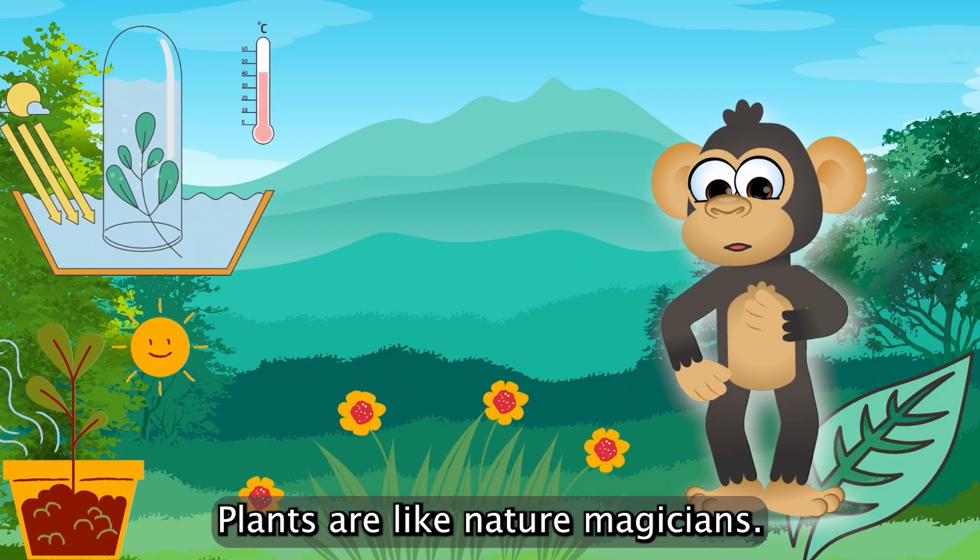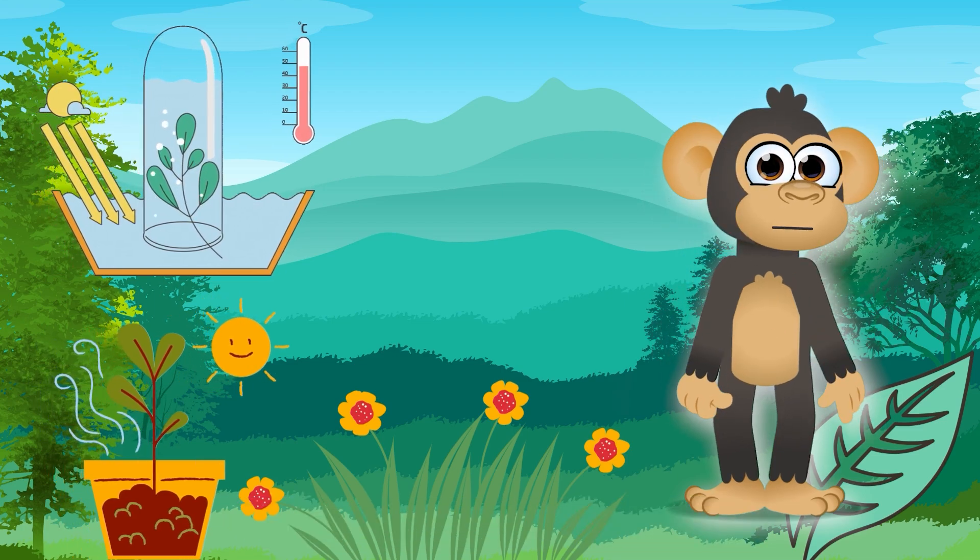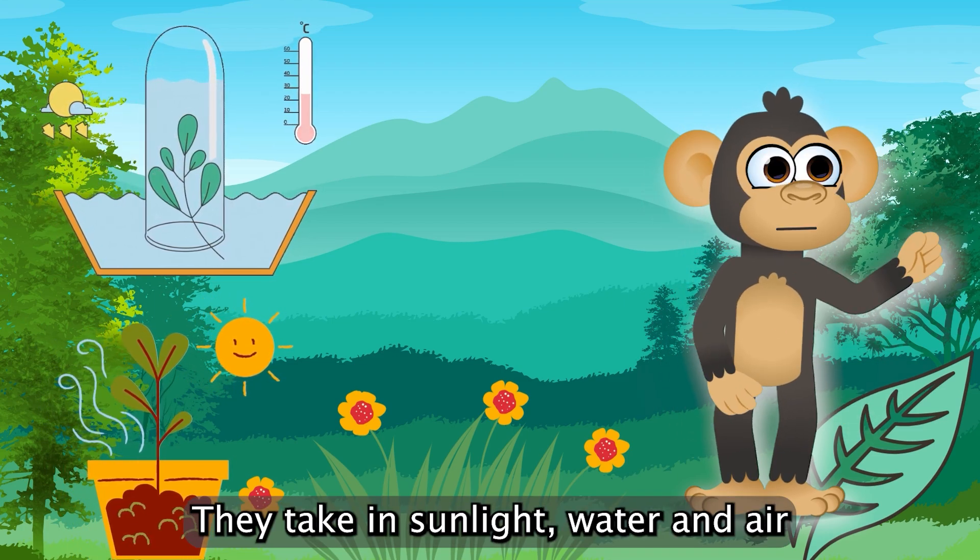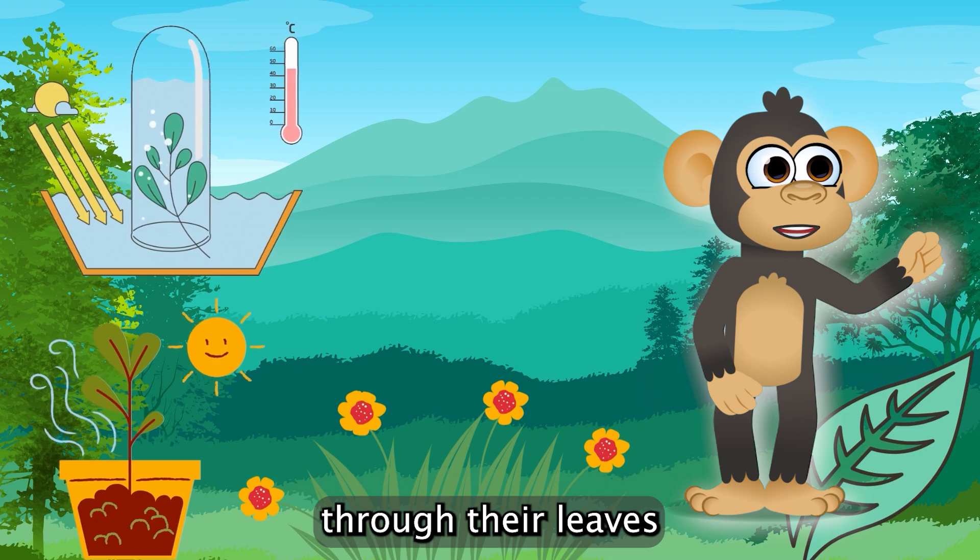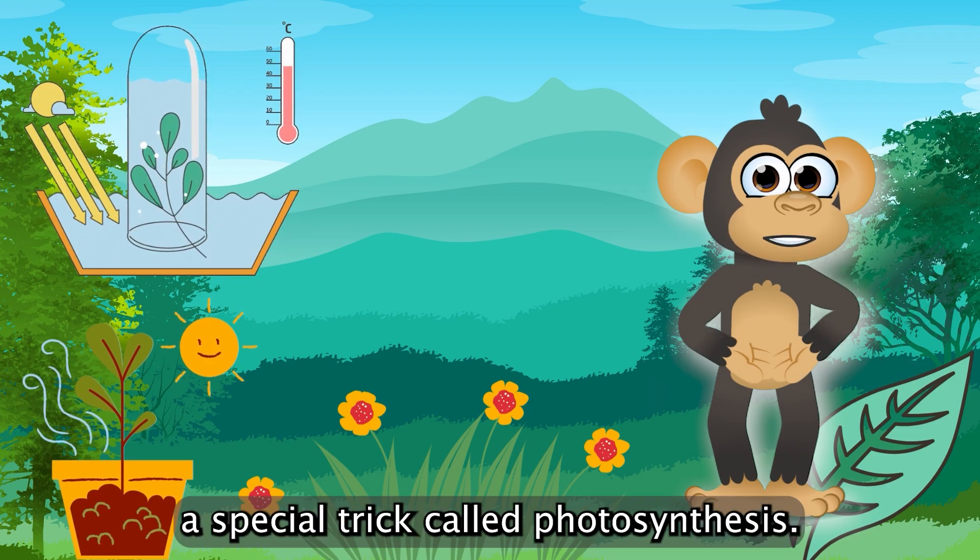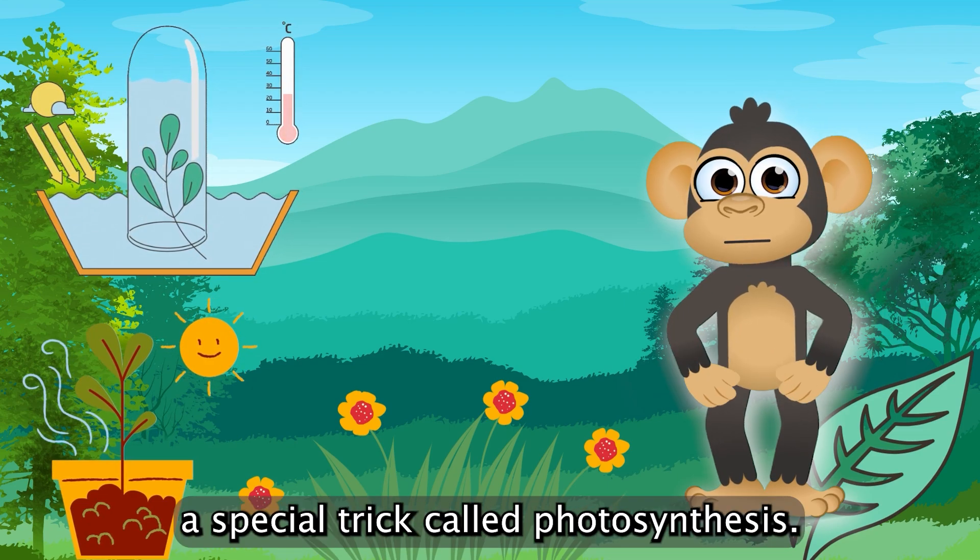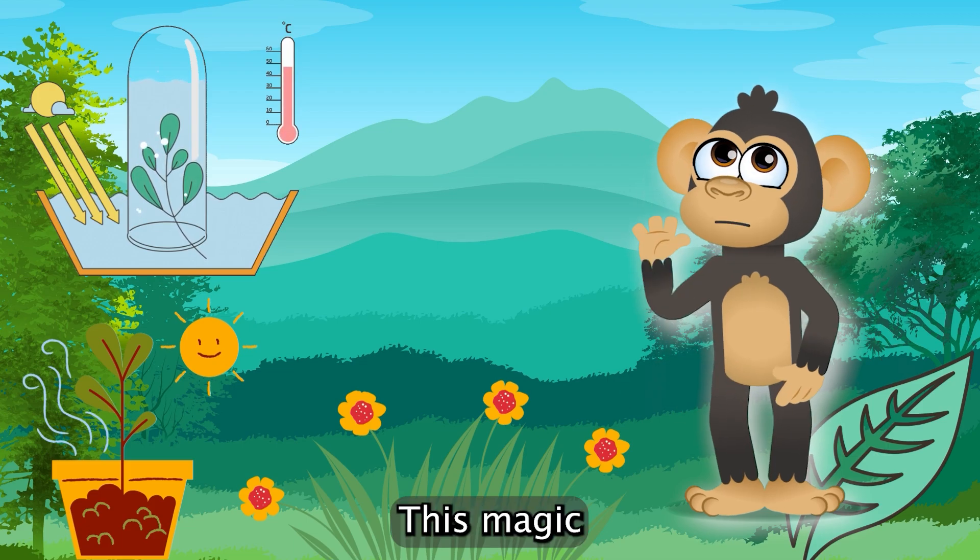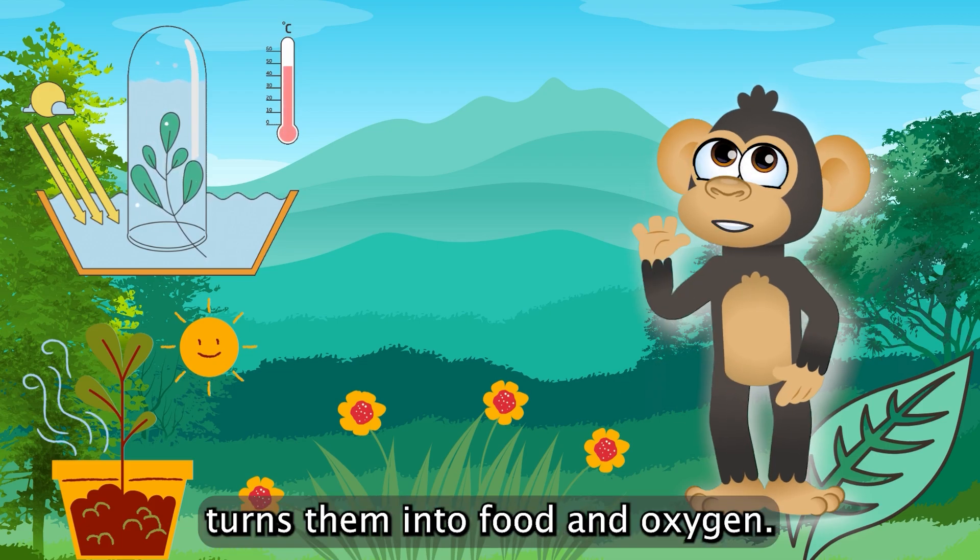Plants are like nature magicians. They take in sunlight, water, and air through their leaves, and perform a special trick called photosynthesis. This magic turns them into food and oxygen.